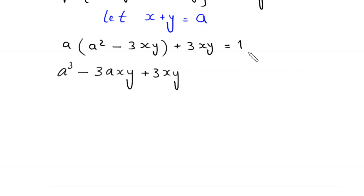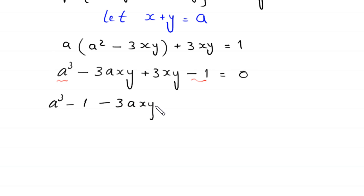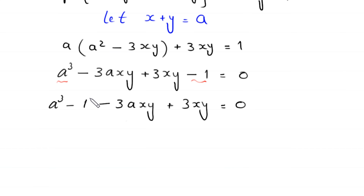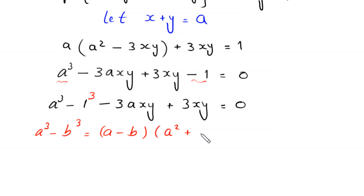Moving 1 to the left-hand side gives a cubed minus 1 minus 3axy plus 3xy equals 0. Now a cubed minus 1 is the same as a cubed minus 1 cubed, so by the algebraic identity a cubed minus b cubed equals a minus b times a squared plus ab plus b squared...